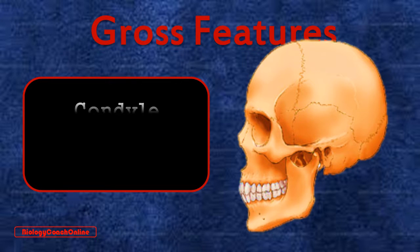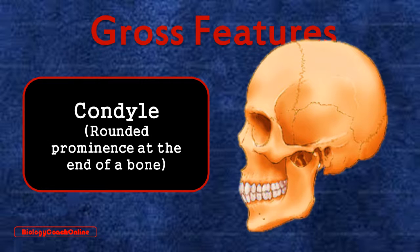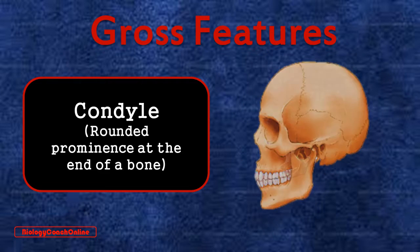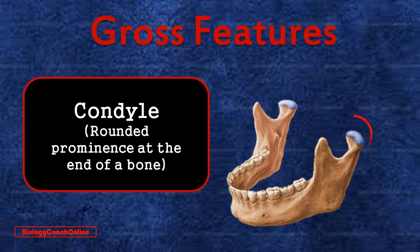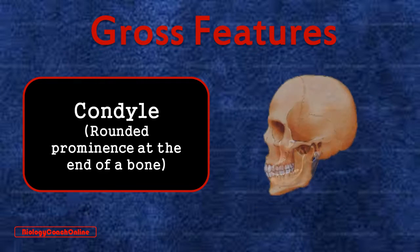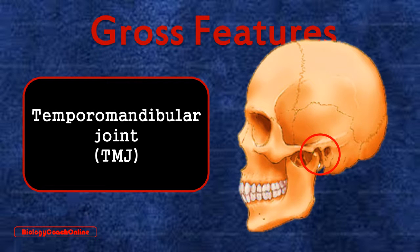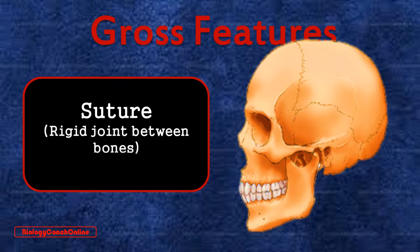Then we have the condyle — a round prominence at the end of a bone. Usually these are parts of joints, so condyles articulate with other bones. A good example is the condyloid process of the mandible, your lower jawbone, which articulates with a temporal bone to form the temporomandibular joint, or TMJ. We have the suture — a rigid, immovable joint between two or more bones. Good examples are the coronal suture, the squamous suture, and the lambdoid suture.